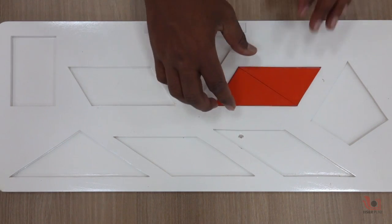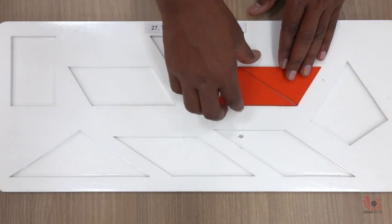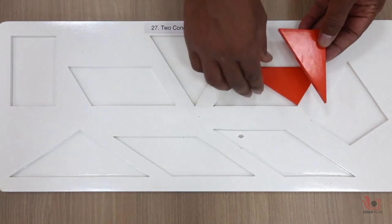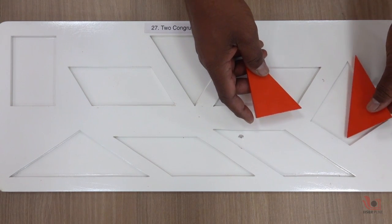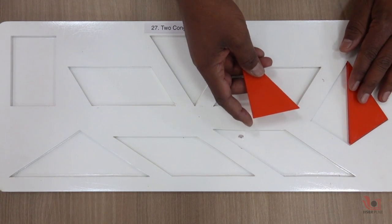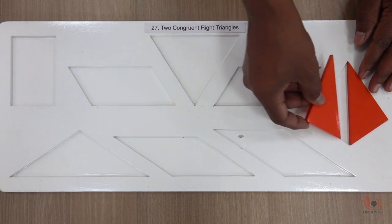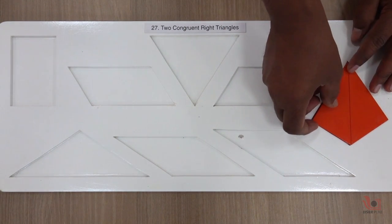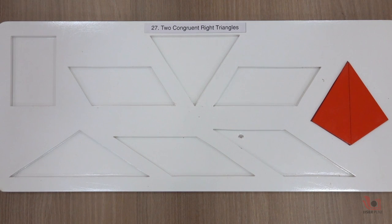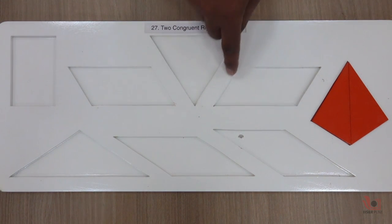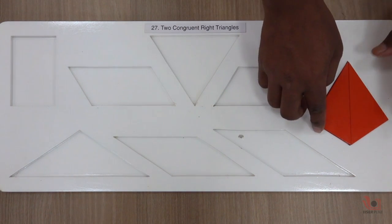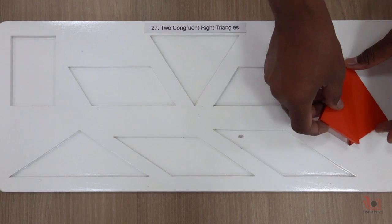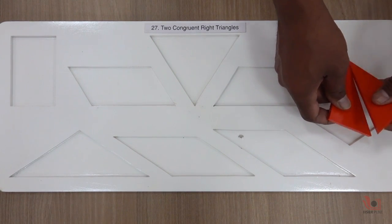You can make a parallelogram. You can arrange the orientation of the two right-angle triangles and make a kite shape. The area of the triangle, parallelogram, and the kite are the same.